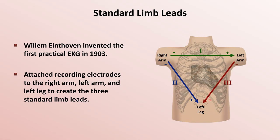Finally, lead 3 has the left arm as the negative pole, and the left leg as the positive pole. The electrode on the right leg isn't used as part of a lead, but is rather used to ground the system.